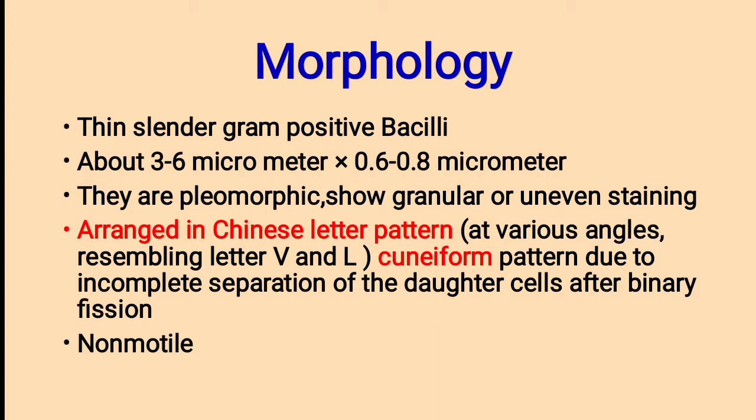Morphology. Corynebacterium diphtheriae is a thin, slender, gram-positive bacilli about 3 to 6 micrometers into 0.6 to 0.8 micrometers in diameter. They are pleomorphic, forming granular or uneven staining patterns. They are arranged in Chinese letter pattern or cuneiform letter pattern — an important point in the morphology of Corynebacterium diphtheriae. This cuneiform arrangement assembles letters of V and L in alphabets.